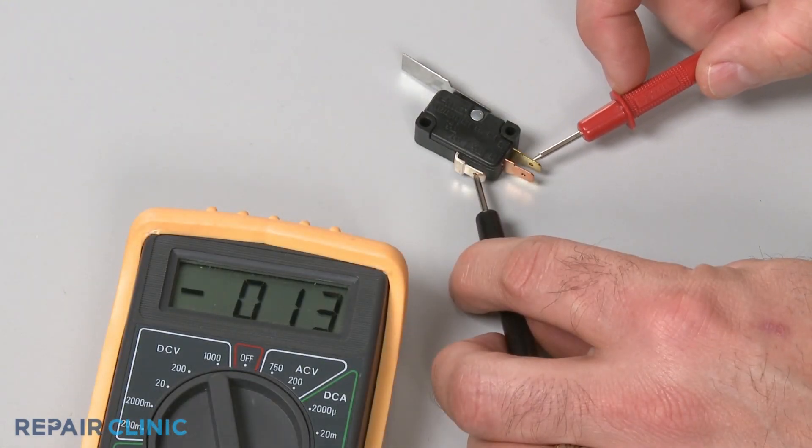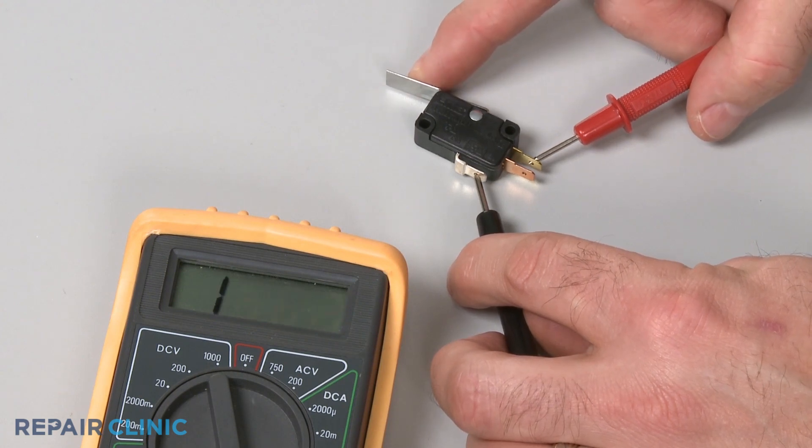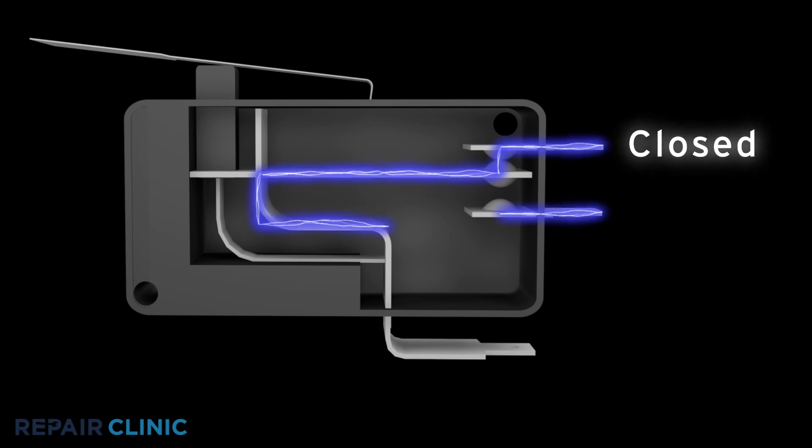Repeat the test for the normally closed terminal to determine if it has continuity. Keep in mind that the normally closed terminal should only provide continuity before the switch has been actuated.